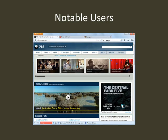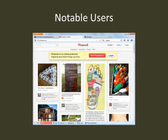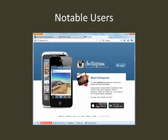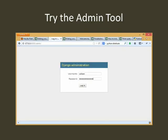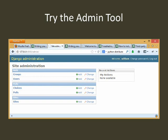Notable users of Django include PBS, Pinterest, and Instagram. It comes with a handy built-in administration tool where you can manage your users and data objects like polls and poll choices. A full redo of the tutorials is out of reach here, but once you have Django running the rest is straightforward, provided your attention to detail is excruciating and you've had about 15 hours of sleep. Let's look at the models, controller, and a view used in the sample polls application.